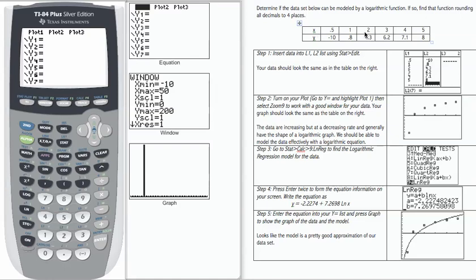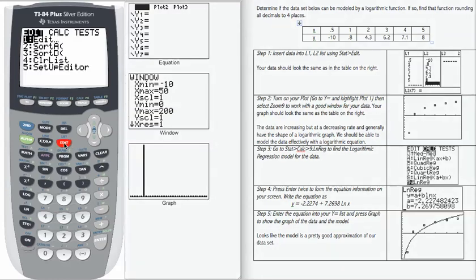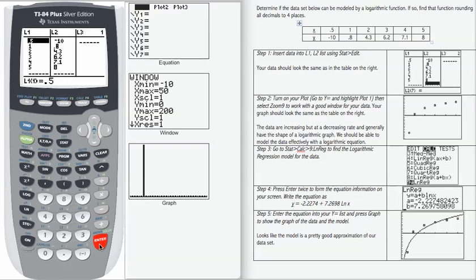So here's our data set here, the x-row and the y-row. Let's enter that into our calculator by going into stat and then edit. Your data should look exactly like what you see here.